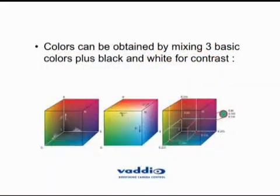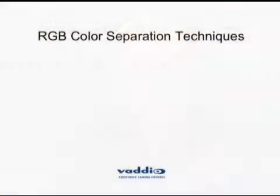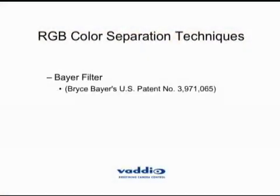There are three basic colors we use to obtain all colors. In television, we use red, green, and blue as the three basic colors, which we then mix in different ratios to get to the true final colors. There are a few separation techniques used in television, the most popular of which is called the Bayer filter.